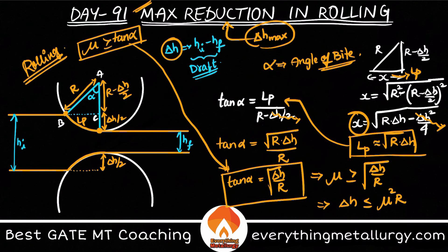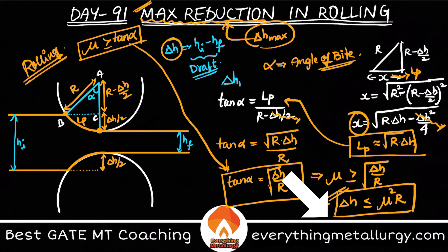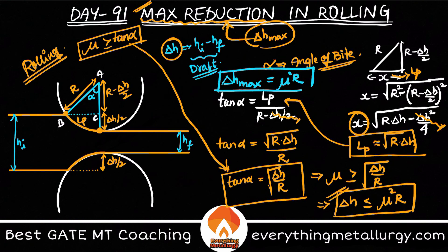Squaring both sides, delta h must be less than or equal to mu squared times r. Since we are dealing with the maximum value — the maximum draft — delta h max equals mu squared times r. This is the important formula for maximum reduction in rolling.